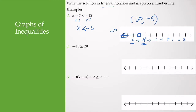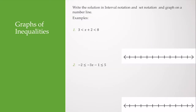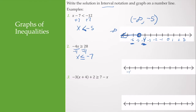Next, I have negative 4x is greater than or equal to 28. I divide both sides by negative 4. Because I'm dividing by a negative, I flip the sign. 28 divided by negative 4 is negative 7, so I get x is less than or equal to negative 7. Negative 7 is included in the solution set, so I use a closed dot and shade to the left. The interval is from negative infinity to negative 7.